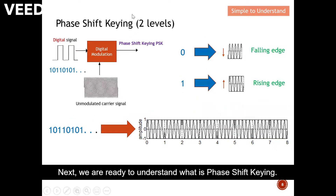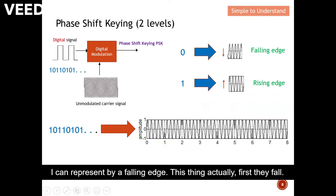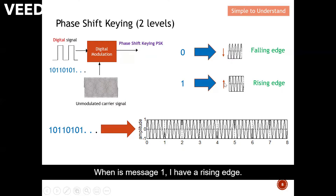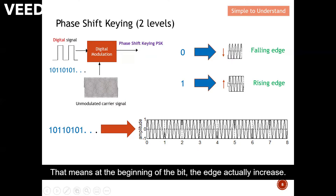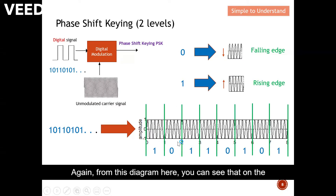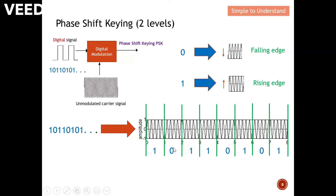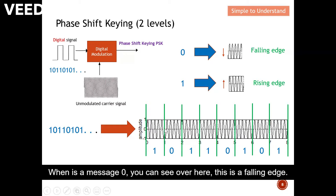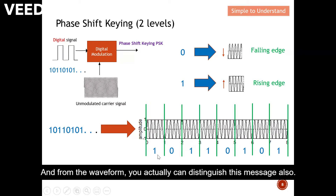Now let's understand phase shift keying with two levels. When the message is zero I represent it by a falling edge — the waveform falls at the start of the bit. When the message is one I have a rising edge — the edge increases at the beginning of the bit. From the diagram, message one has a rising edge and message zero has a falling edge. With this you can generate the waveform and distinguish the message.